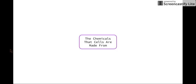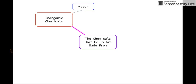So we're going to start by having a look at the chemicals that are in cells. All cells are made from a particular group of chemicals and this can be broken down into two main groups, being inorganic and organic chemicals. If we start off by looking at inorganic chemicals, these include simple molecules like water, carbon dioxide and oxygen, as well as mineral ions such as calcium, nitrates, phosphates and chlorides.